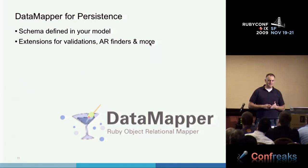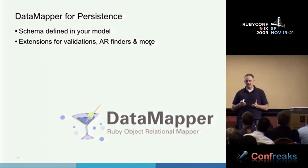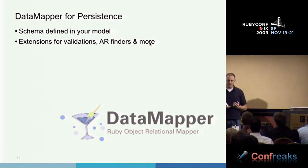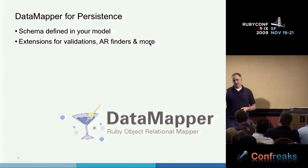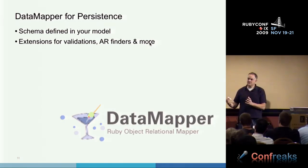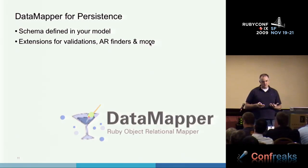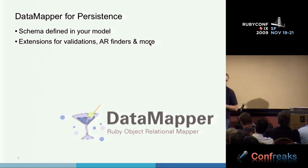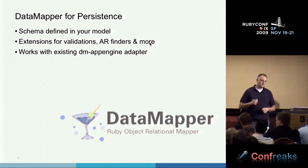We also like Data Mapper for persistence. Unlike Active Record, where you have a model that's sometimes empty with a migration describing your schema, with Data Mapper your schema is actually in the model and there are no migrations. If you want to add a new attribute, you just throw it in and those records are created with the new attribute. The Datastore just persists those objects — there's no translation to SQL, there is no SQL. You also have access to extensions like validations and Active Record-style finders. It works with the existing DM adapter for Data Mapper that Ryan wrote, so you can start using it today.